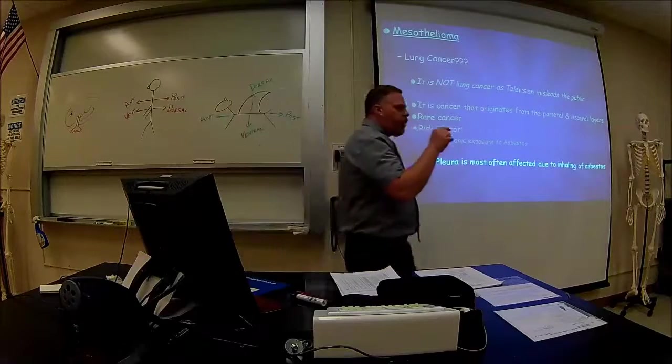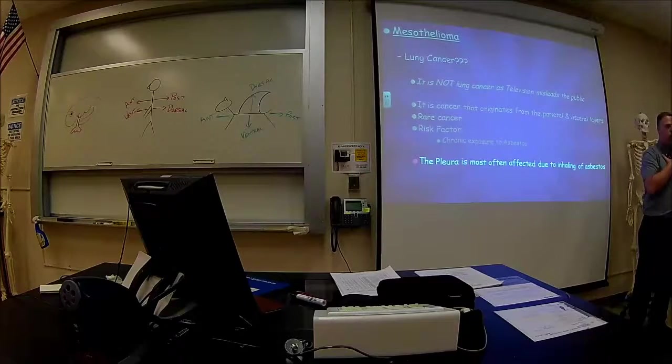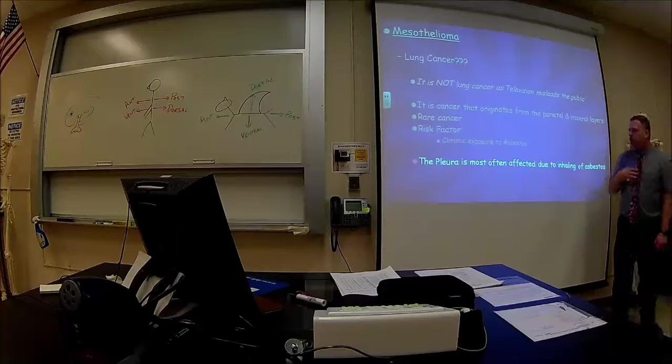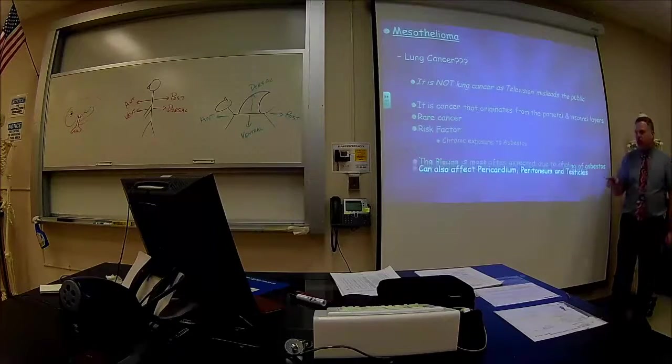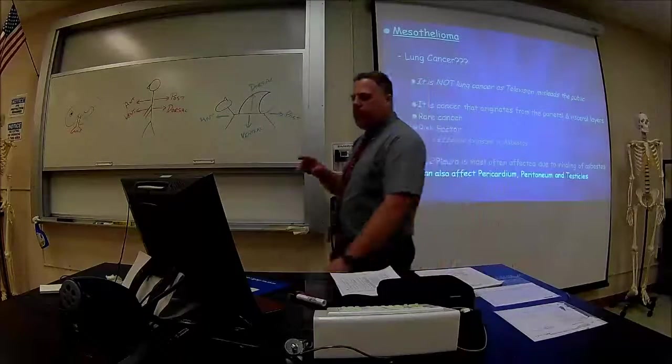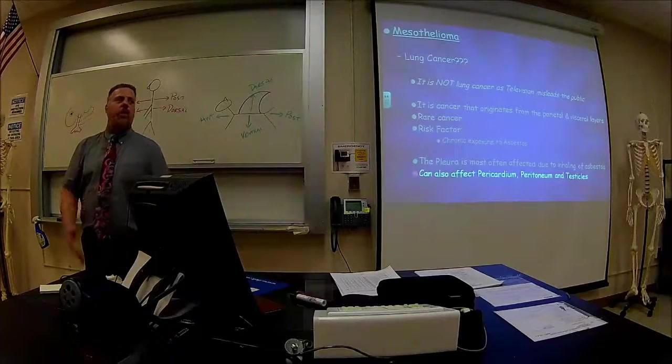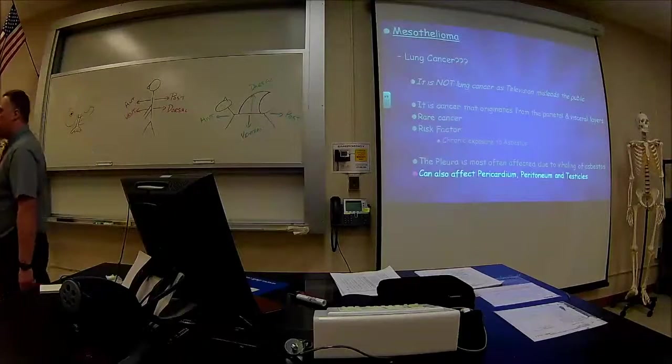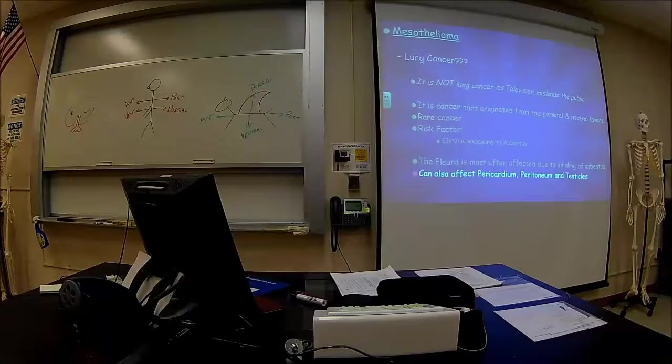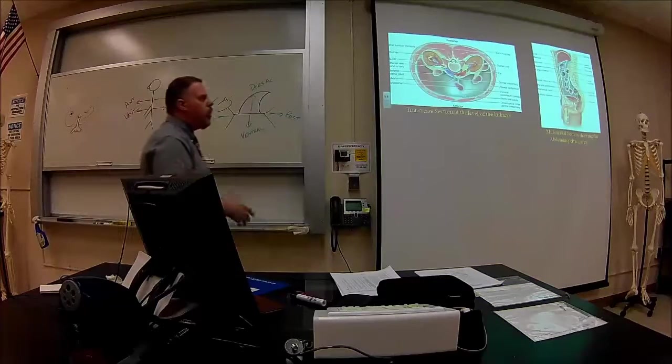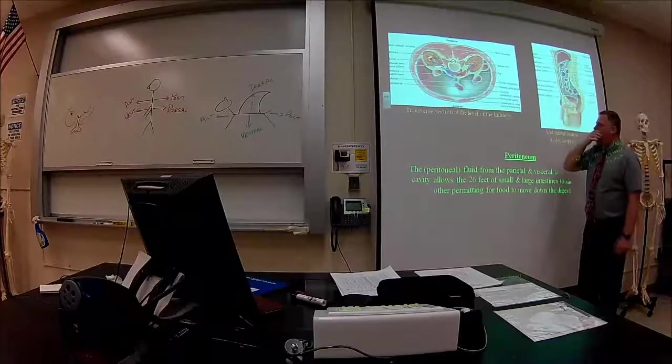Mesothelioma is a cancer of the visceral and parietal layers, not just of the lung, just in the pleural cavity. It's usually caused because you're inhaling this asbestos. But don't get upset when someone says they could have mesothelioma in the pericardium, in the peritoneal cavity, in the testes. Parietal and visceral layers are not just found in the chest, they're found elsewhere. We just see it a lot more in the lung area because they usually breathe it in there.